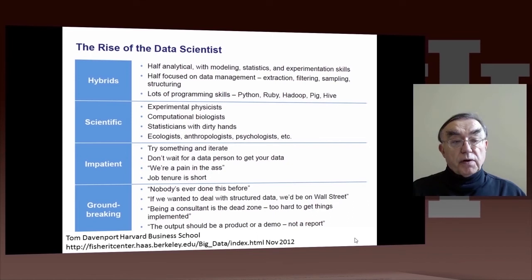To perform the data science process, we need data scientists, and this is Davenport, an evangelist in this area from Harvard Business School, his view of a data scientist. At the top, he makes an important, but possibly slightly controversial, statement about what a data scientist is. He says that the person is 50% statistician and modeling, and 50% computer science issues such as data management, and he can do lots of programming.